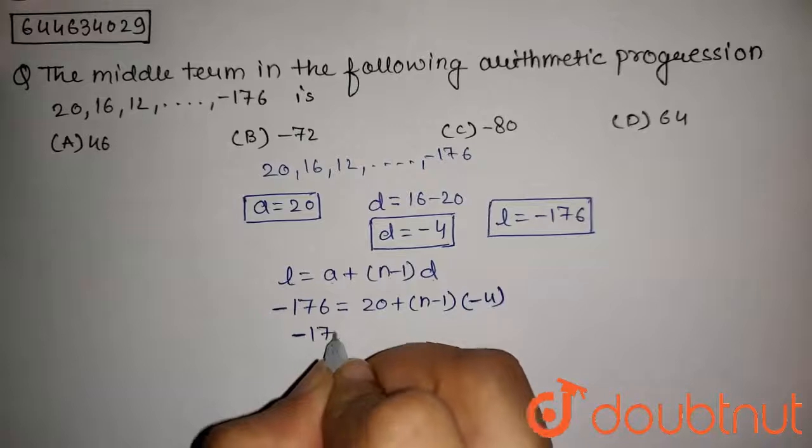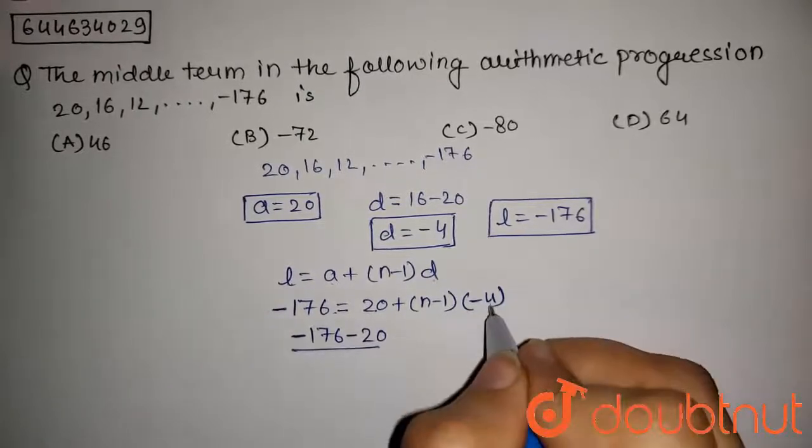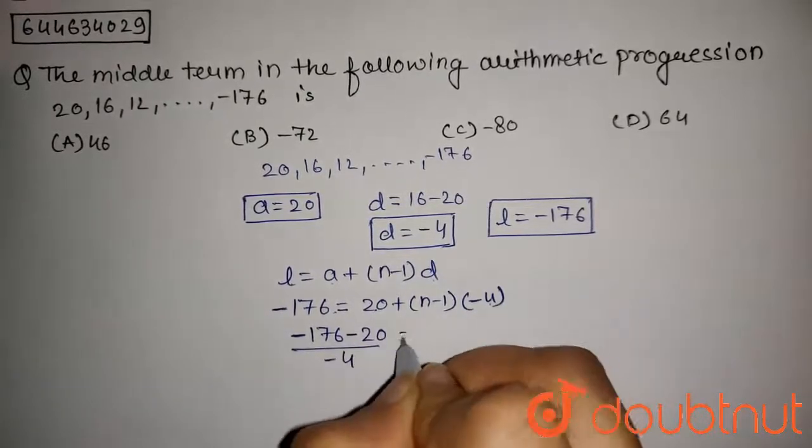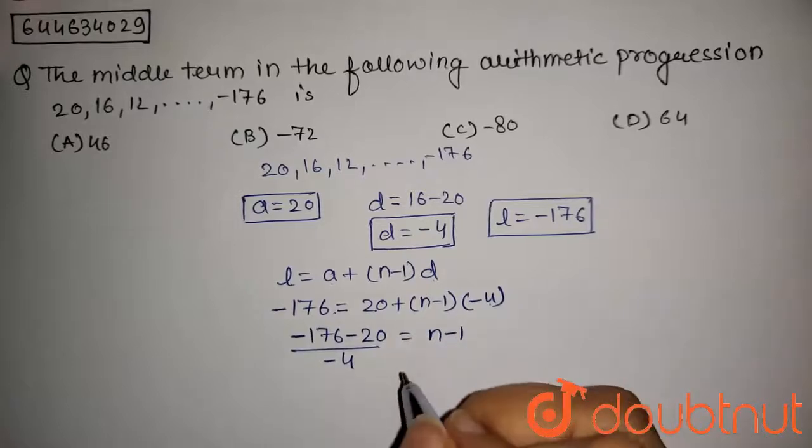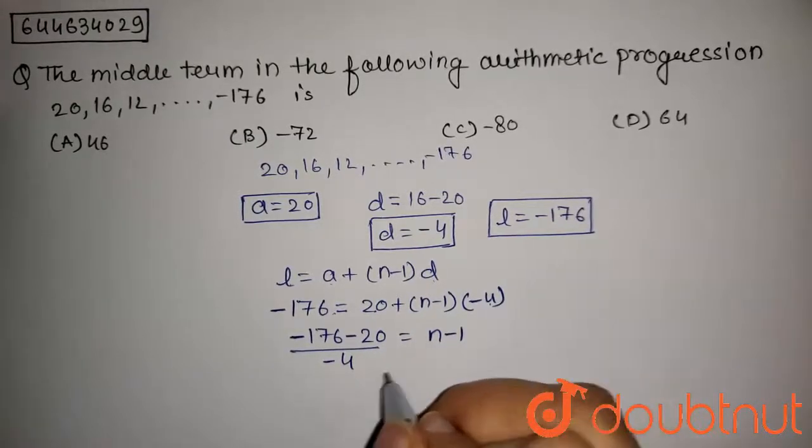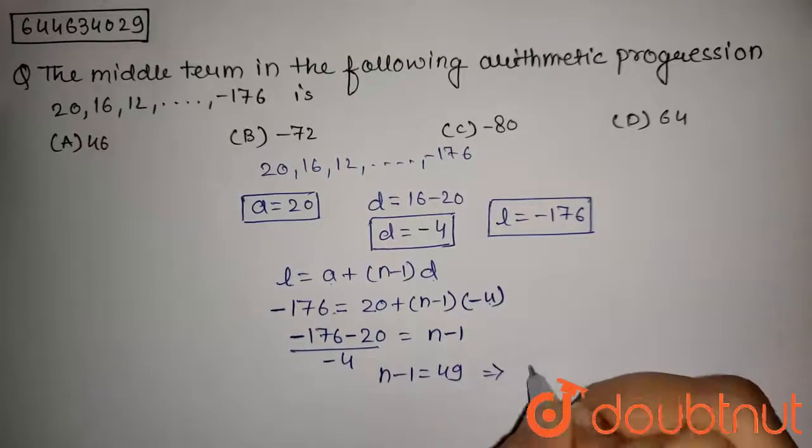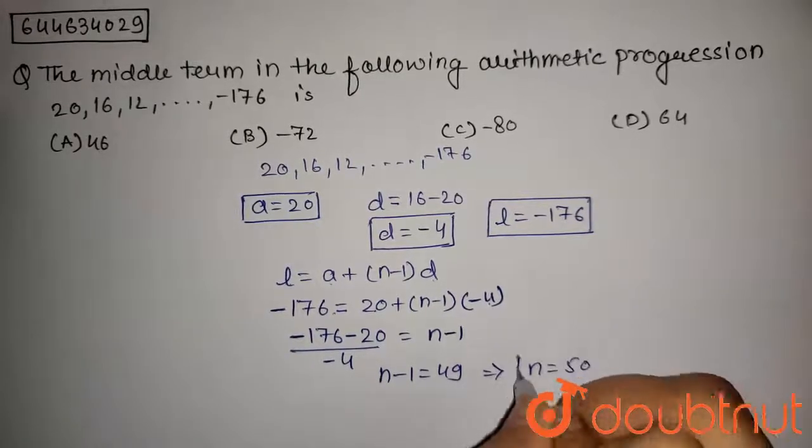Or this will be equal to -176, this will be transferred here as -20 upon -4 is equal to n-1. And so this will give n-1 equals to 49 which implies n will be equal to 50.